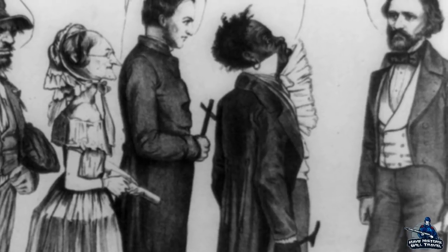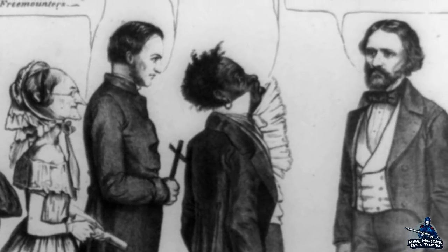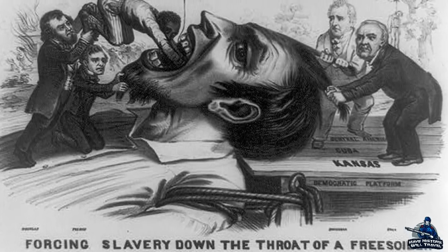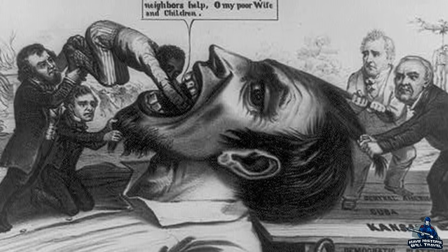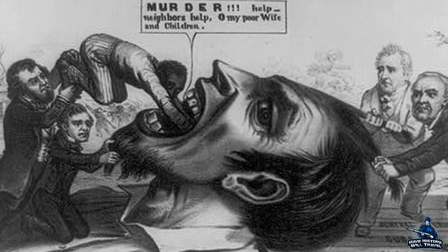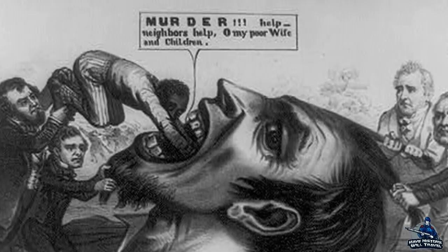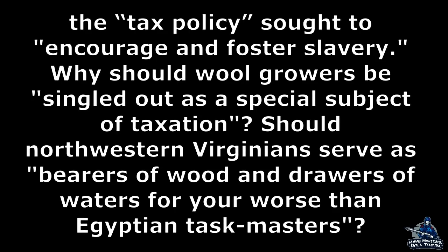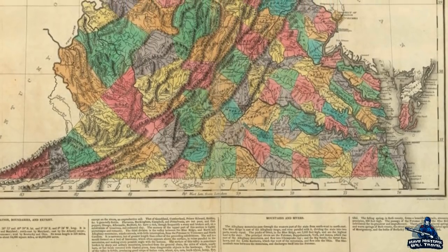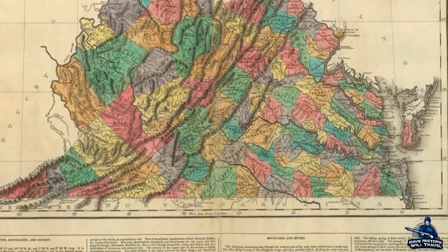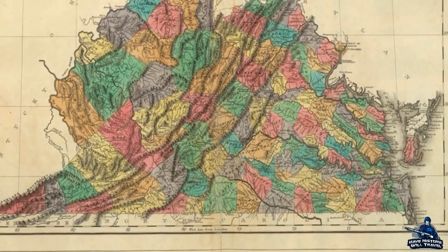In early 1860, when the legislature considered raising taxes to finance military mobilization, north-westerners objected to a tax on wool, a product raised mostly in western Virginia, while eastern tobacco, corn, and wheat remained untaxed. This reflected a large tax policy that exempted slaves under age 12 and only nominally taxed other slaves while taxing land and livestock according to their full value. A north-western newspaper complained that the tax policy sought to encourage and foster slavery, asking why wool growers should be singled out as a special subject of taxation. When Lee County's David Miller proposed a resolution in January 1860 to equalize taxation, a north-westerner concluded there was no hope it would receive any favor from that legislature. Truly, slave property was privileged.